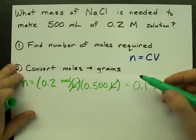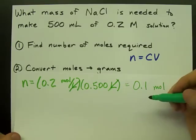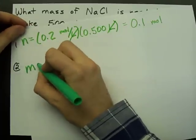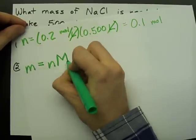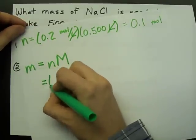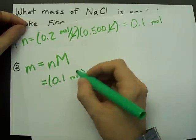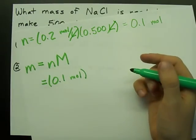Now all that's required is for me to convert from moles to grams. I can do that because mass is the number of moles times the molar mass. I already calculated my number of moles, 0.1. Now I need the molar mass of NaCl.